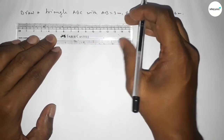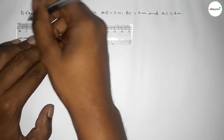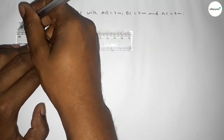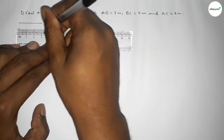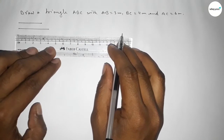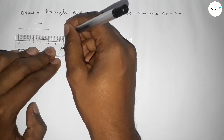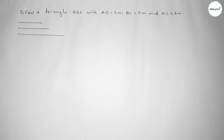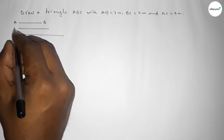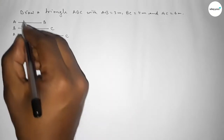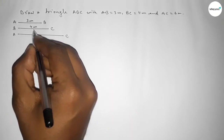First of all, we draw a line of length 3 centimeter, then another line of length 4 centimeter, and last a line of length 6 centimeter. This one is the AB line, this one is the BC line, and this one is the AC line — so 3 centimeter, 4 centimeter, and 6 centimeter respectively.